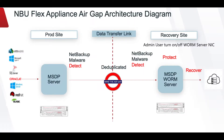With the NetBackup anomaly detection engine running on the production side, anomalies in the backup process are automatically and continuously analyzed to avoid transferring malware to the RRE site. We also suggest adding malware detection workflows on the RRE site prior to the data being copied to the immutable storage.